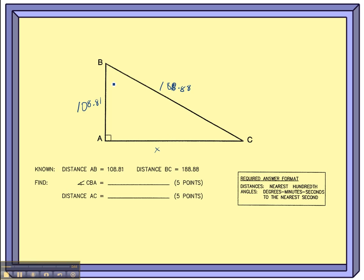The question is, if I have myself a right triangle, what do I use if I have two of the sides and I want to find the third side? I have to use the Pythagorean Theorem. On this, what I'm going to do is instead of adding, I'm going to subtract, right? Because it's X squared plus 108.81 squared equals 188.88 squared.